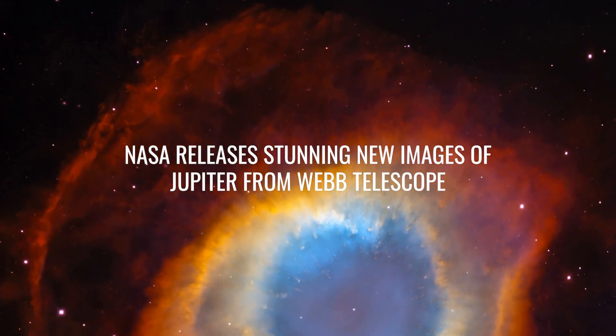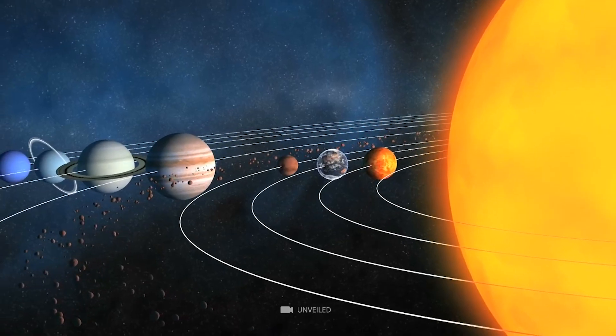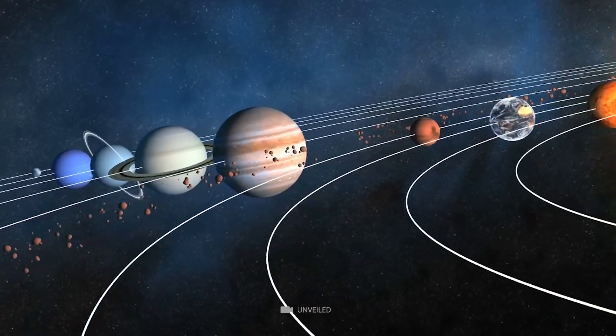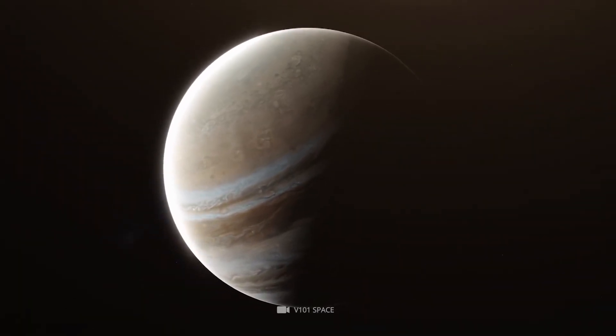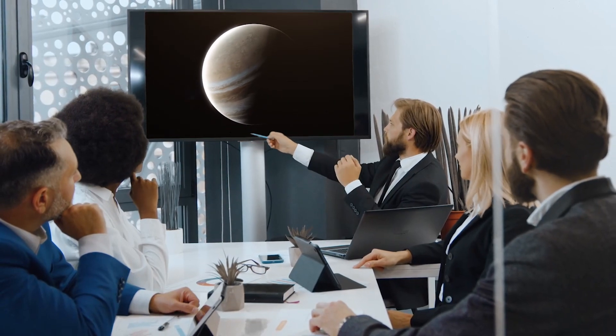NASA releases stunning new images of Jupiter from Webb Telescope. Jupiter lies 365 million miles at its closest point to Earth, and when it's at its farthest, it lies about 600 million miles away.